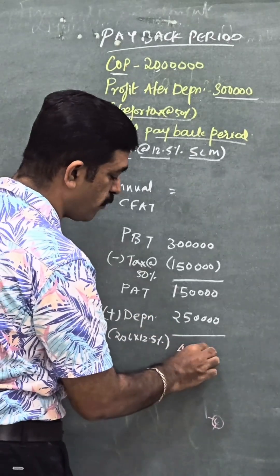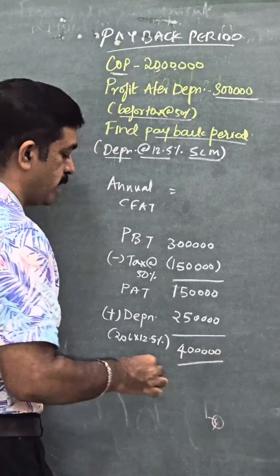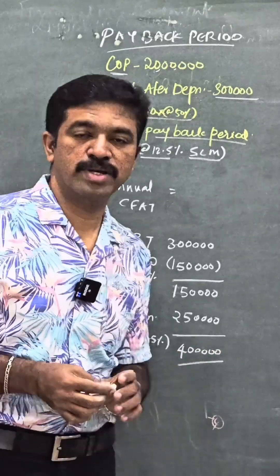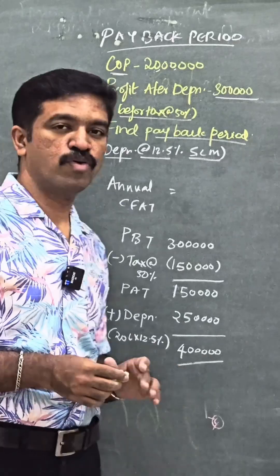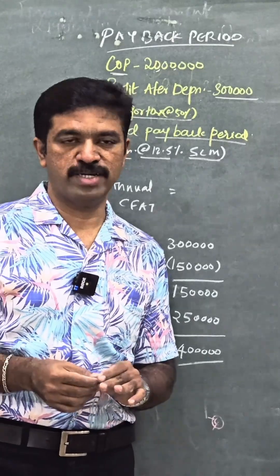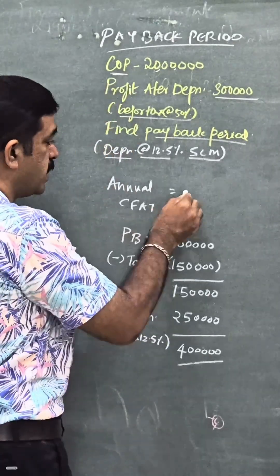You don't have any other information about the interest on loan or changes in working capital, so we'll make an assumption that this 4 lakh is the annual cash flow after tax. So now finding payback period is simple. We have information about annual cash flow after tax.